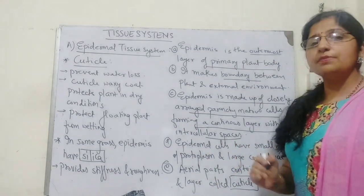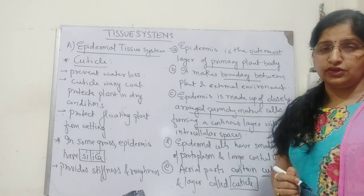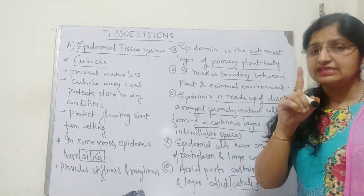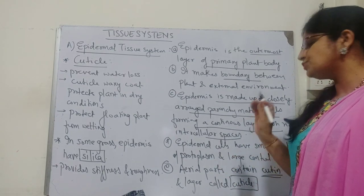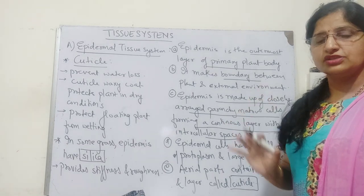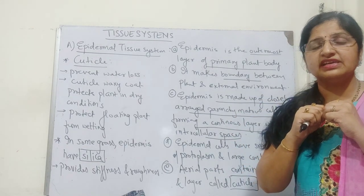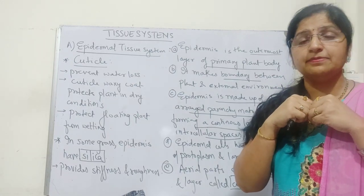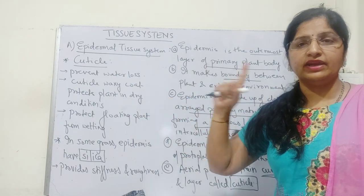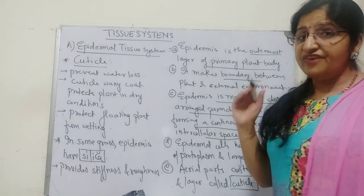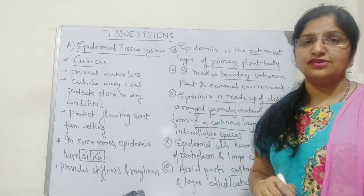Epidermal cells have a small amount of protoplasm and a very large central vacuole. Cells are without intercellular spaces, very tightly bound with each other, and arranged in a single layer making one complete layer of epidermis. The characteristic feature of these parenchymatous epidermal cells is very less protoplasm but a very large central vacuole.